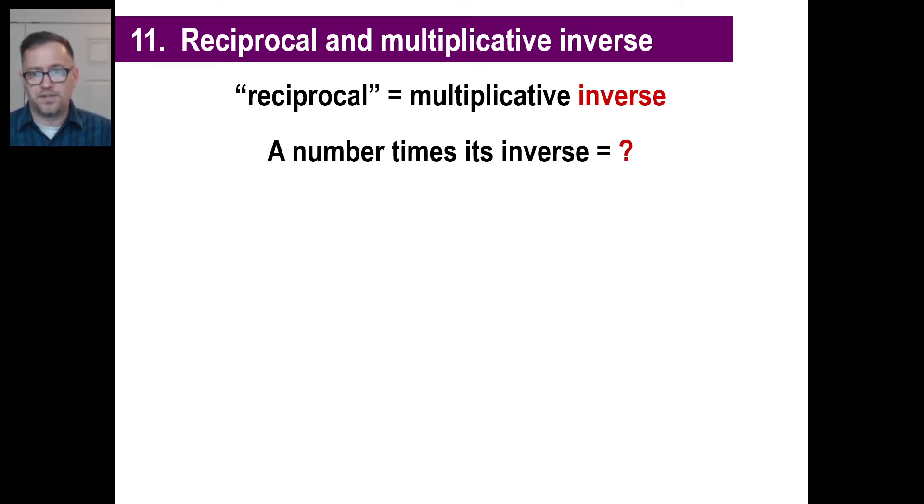A number times its inverse, in other words, let's say you have a number, I don't know, let's go three-eighths. The inverse of three-eighths would be eight-thirds, right? What if you multiply those two fractions together? What would you get as an answer? One, right? So the number times its inverse is one. That is going to be important later on, so keep that filed away.